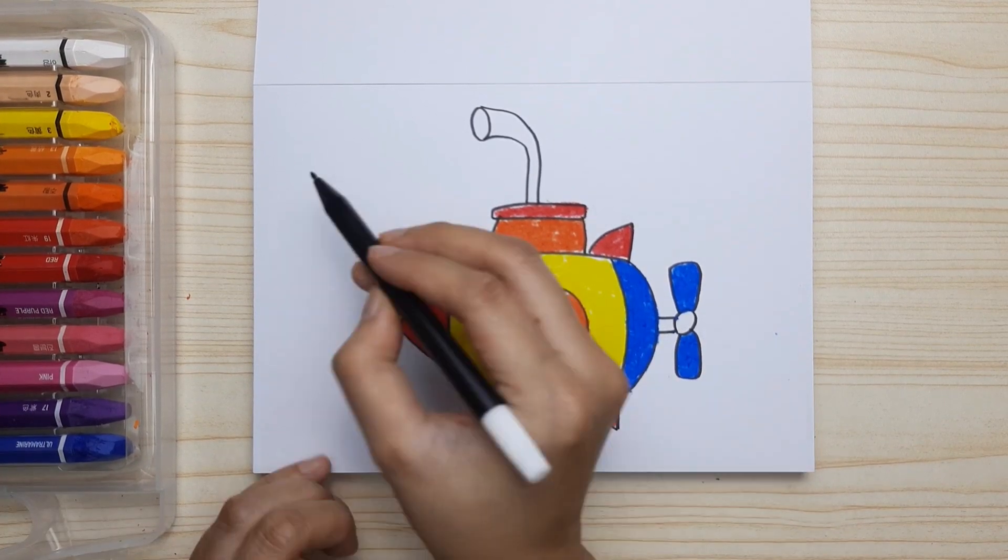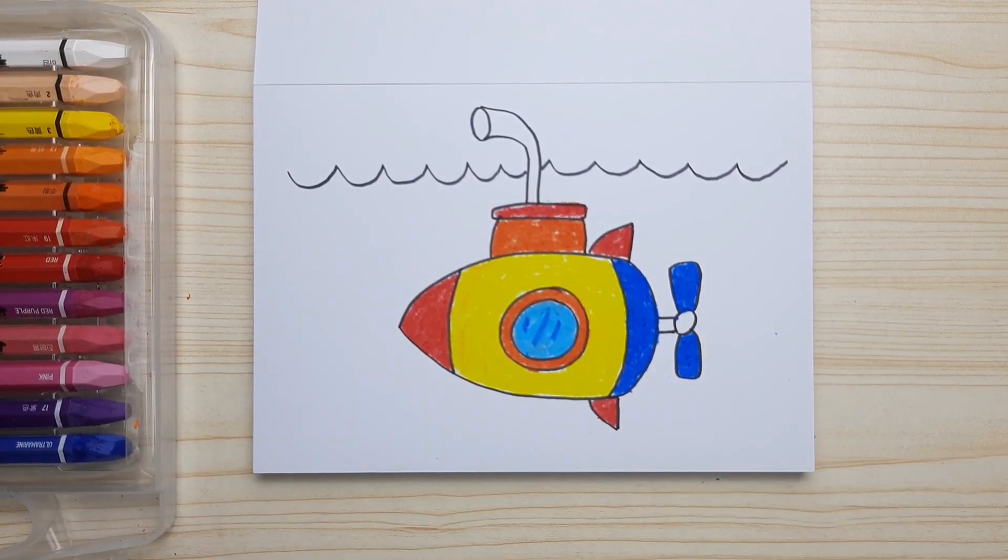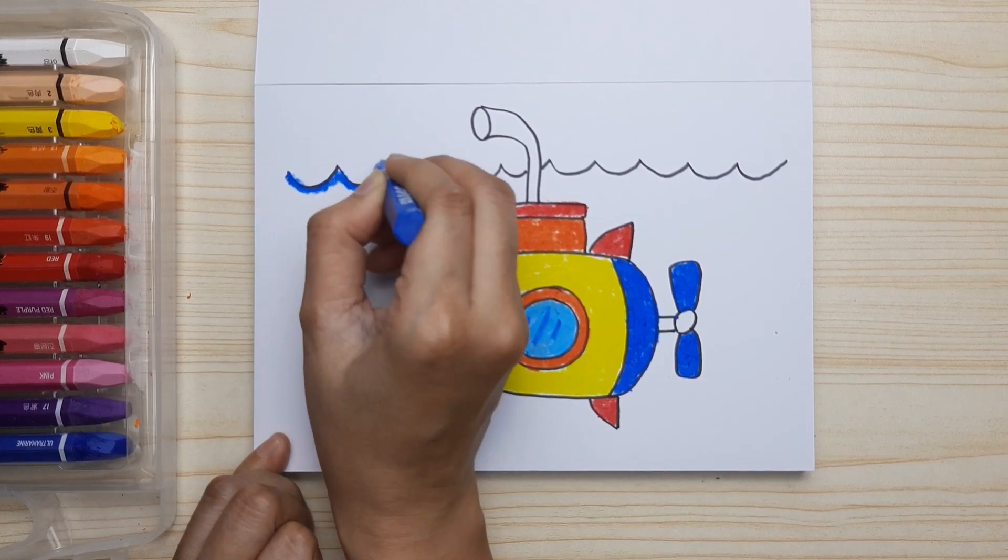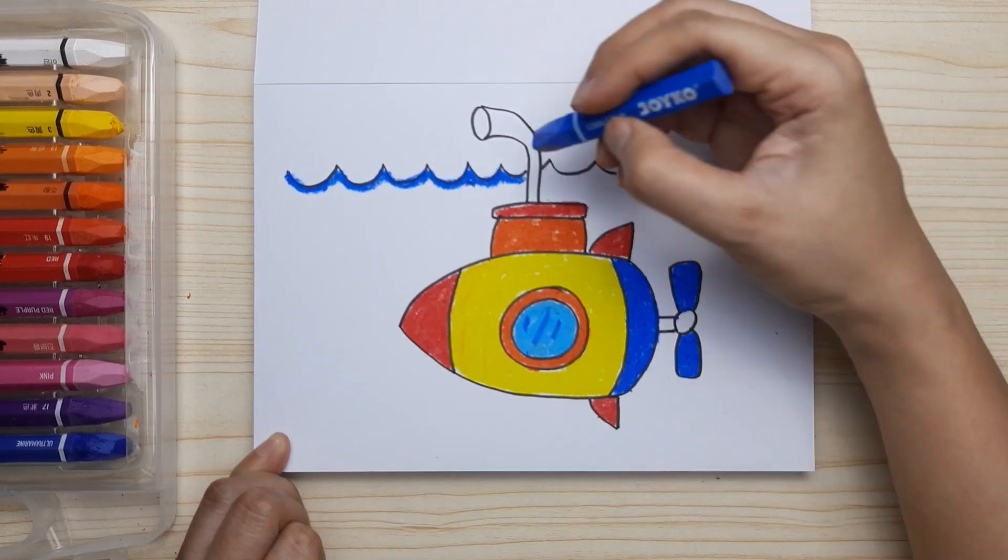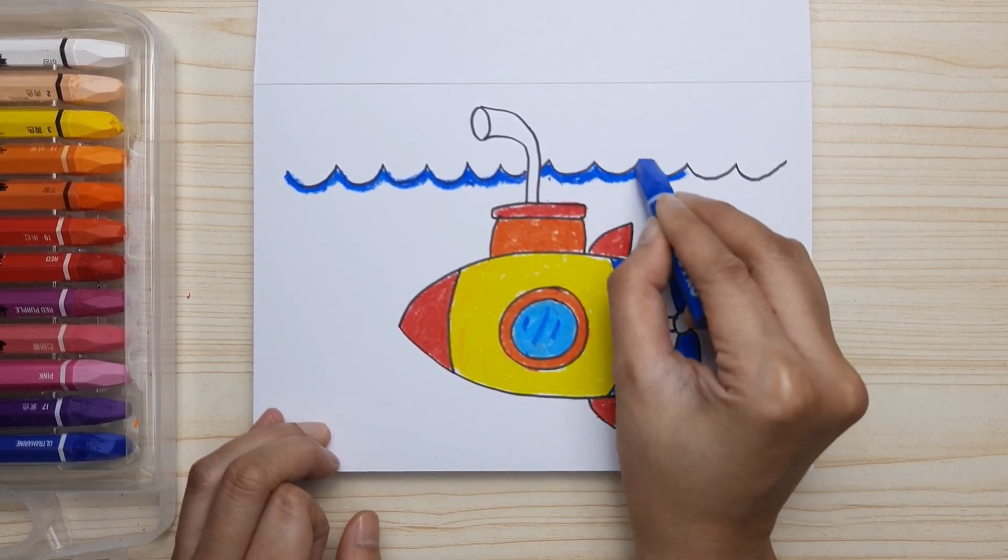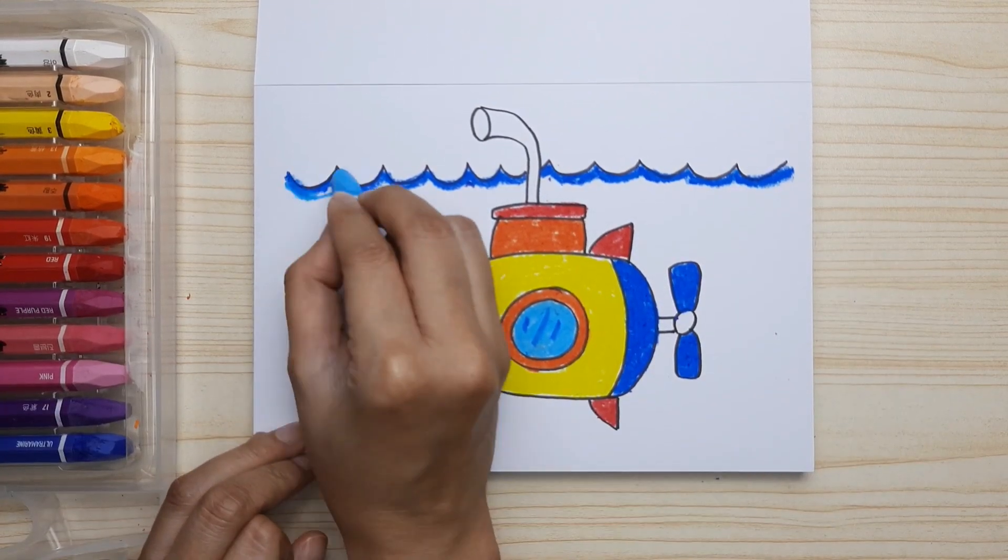I'm adding the ocean waves, just like that, and color it with dark blue. And then after dark blue, we're going to progress to light blue.